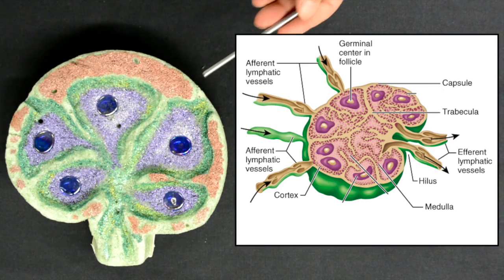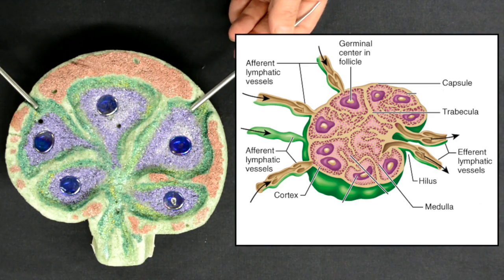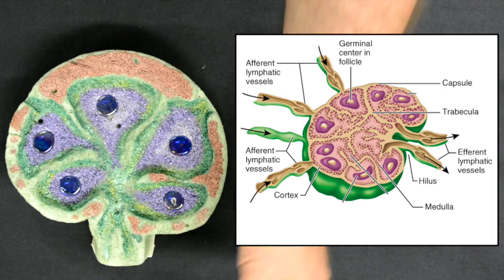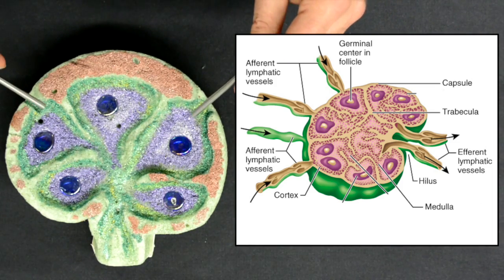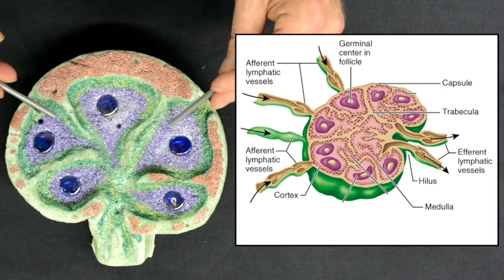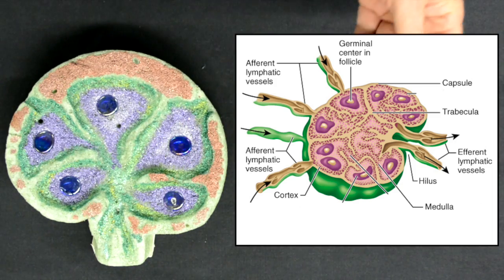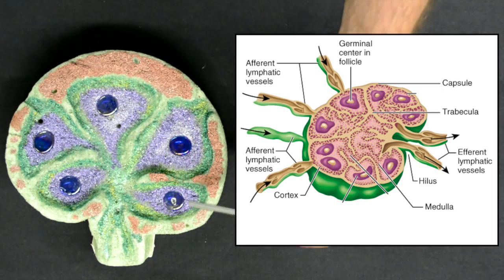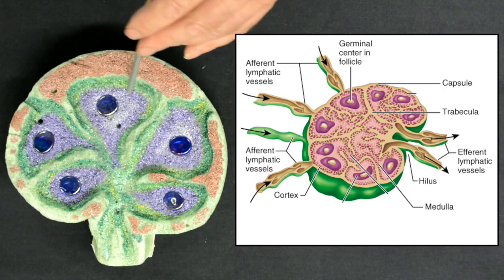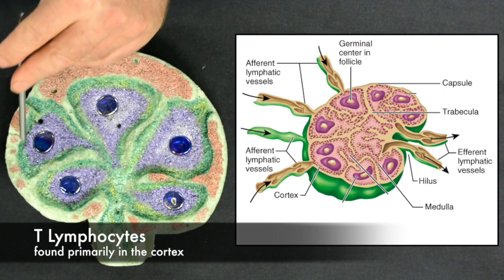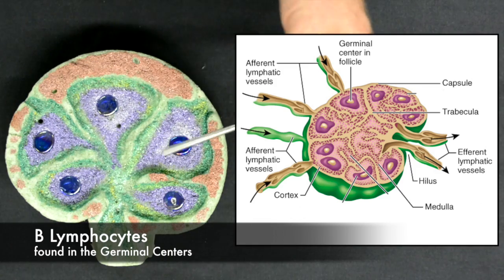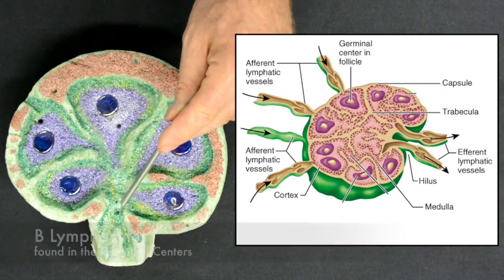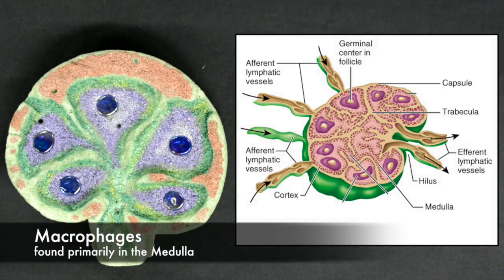As a result of many vessels coming in but only one leading out, fluid passage slows down through the lymph node where it is filtered. In the cortex, we have T lymphocytes. While in the germinal center, we have B lymphocytes. And in the medulla, we mainly have macrophages.